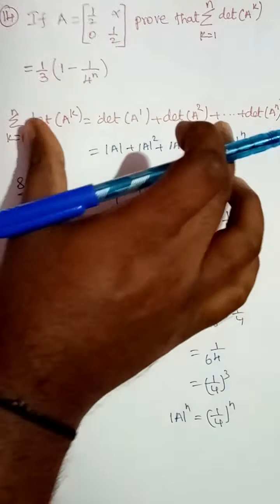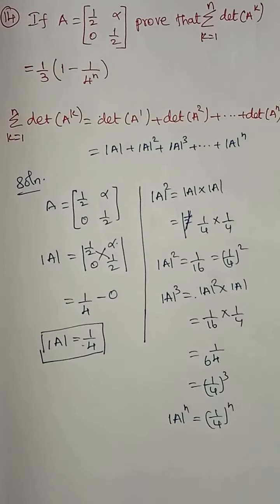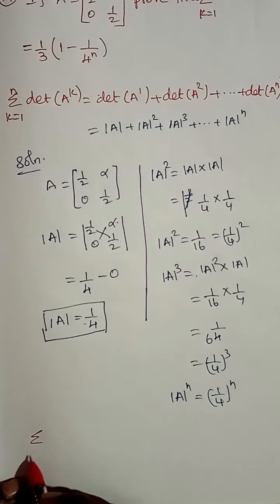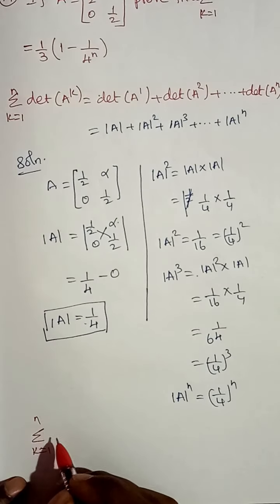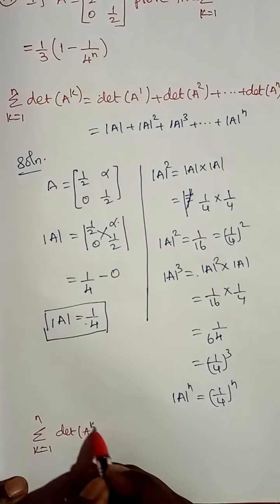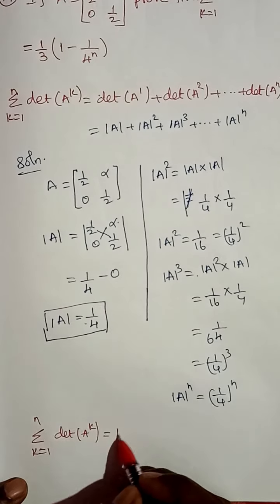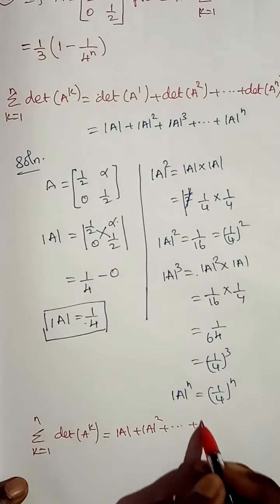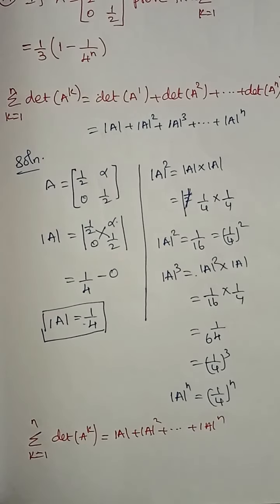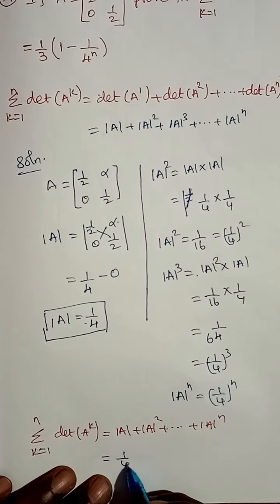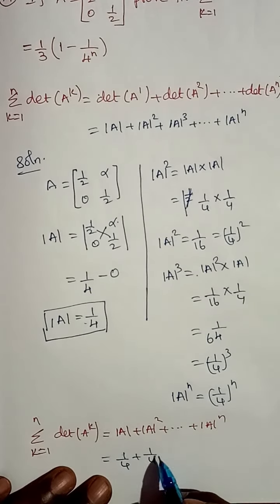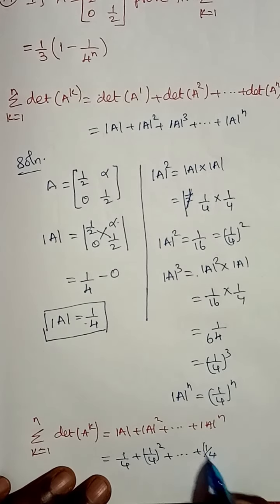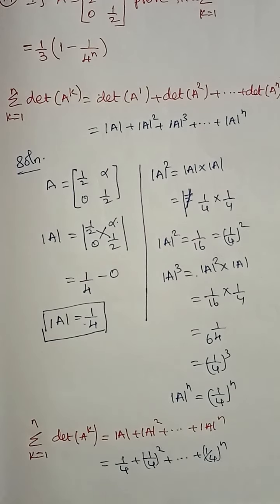Now I am going to substitute these values. Summation k equal to 1 to n of determinant of A power k equals determinant of A plus determinant of A squared, and so on plus determinant of A power n. Substituting: 1/4 plus (1/4)^2 plus and so on plus (1/4)^n. This is in the form of a GP.